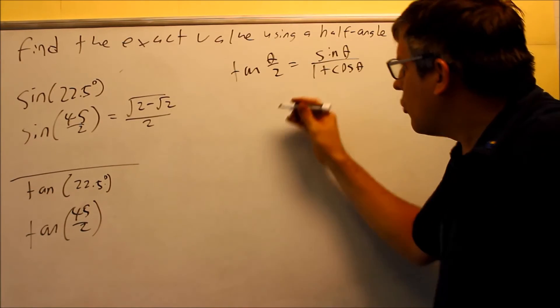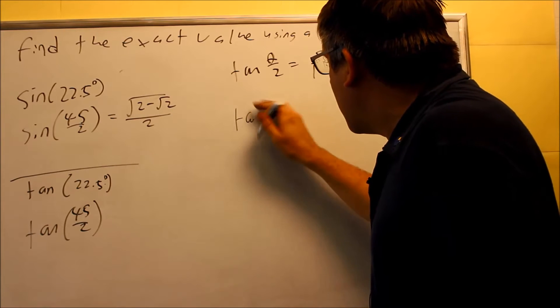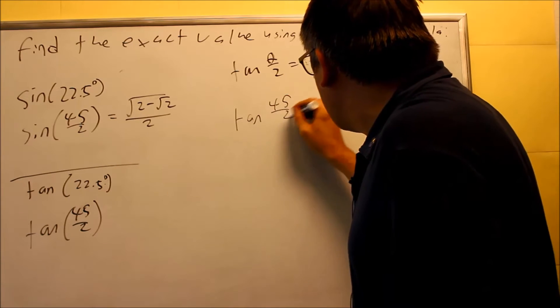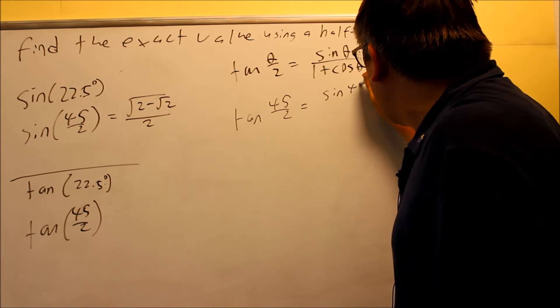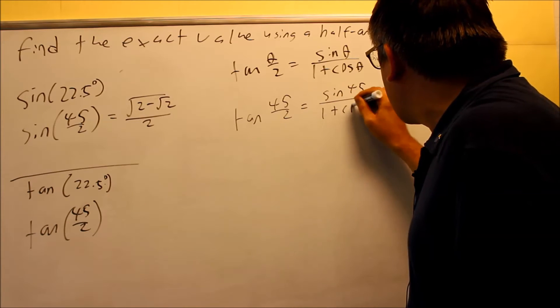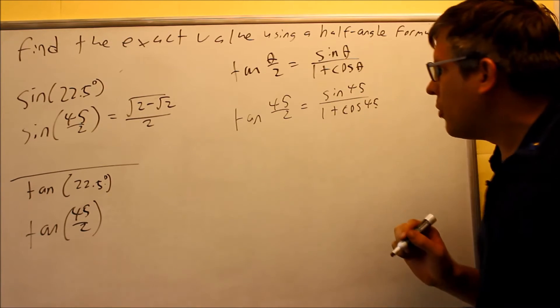Again, the 45 is going to be what I have for theta. So I have tangent 45 over 2 is going to equal sine 45 over 1 plus cosine 45. I'm putting 45 in for both.